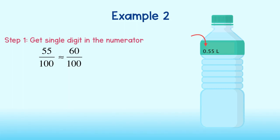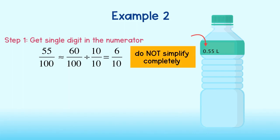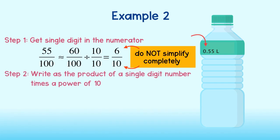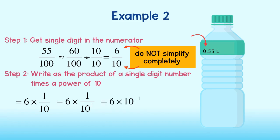Now we simplify so that the numerator is a single digit. We can divide both numerator and denominator by ten to get six tenths. Notice, we did not simplify completely — we want to simplify only enough to get a single digit in the numerator, while keeping a power of ten in the denominator. Now let's write this as a single digit times a power of ten: six times one-tenth, which is the same as six times one over ten to the first power. Using the negative exponent rule, we bring the ten to the numerator, writing it as six times ten to the negative first power. Fifty-five milliliters is approximately six times ten to the negative first liters.